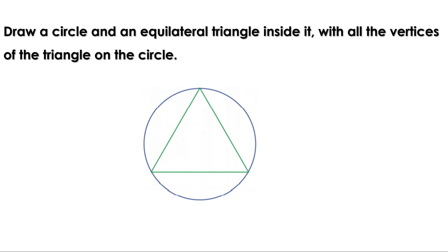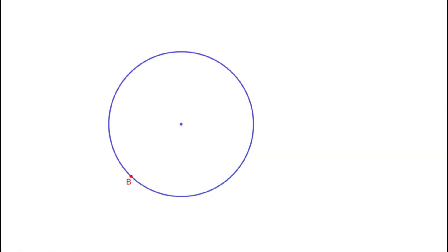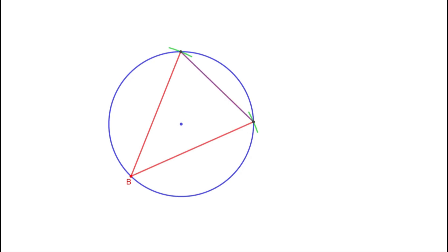So it is enough to draw three equal chords, each pair of which intersect on the circle. It is easy to draw two equal chords from a point on the circle, but the chord joining the end points may not be of the same length. Then how can we draw it?